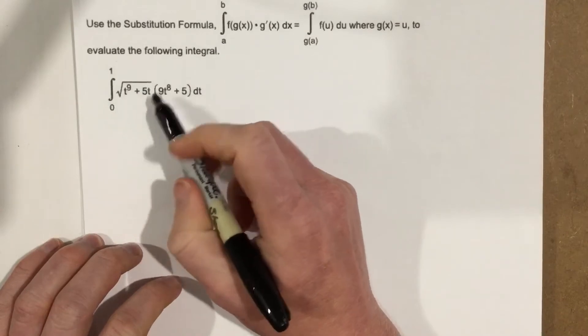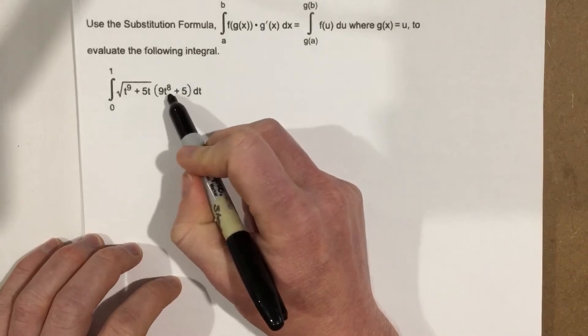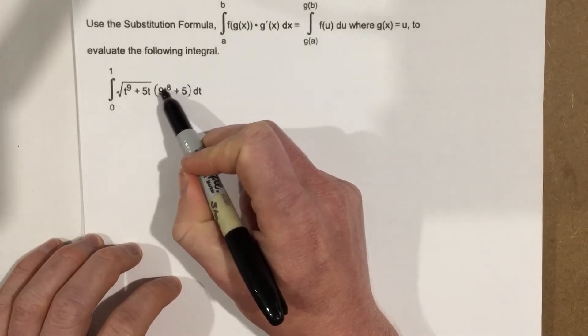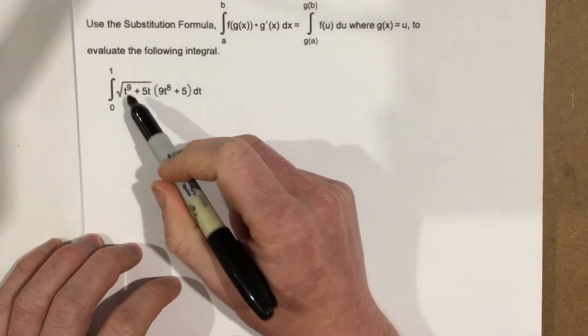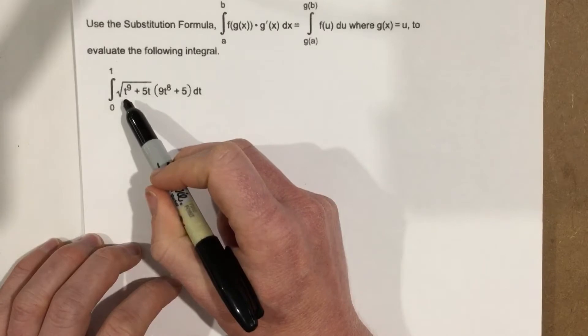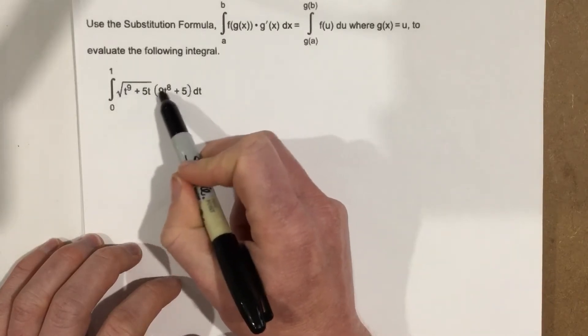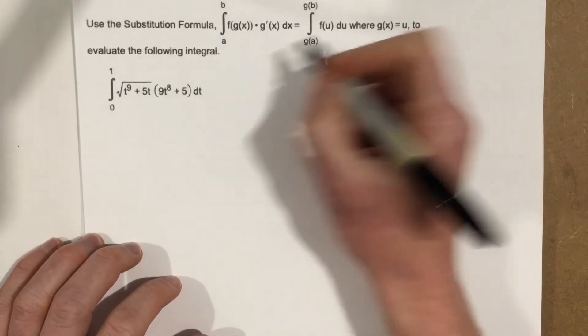Now I kind of looked at this piece first, and I said what if I made u this? Well I would bring the 8 to the front when I do the du over dt, that would be 72 t to the 7th. Now I'm going to cancel t to the 9th. So I went the other way around and said what if I did t to the 9th, took that derivative, that would be 9 t to the 8th. Okay that's going to do some canceling. So that's how I kind of pick my u value here.